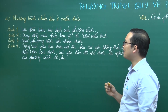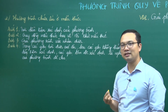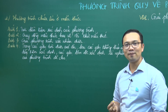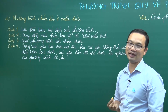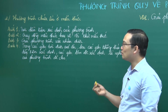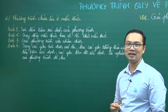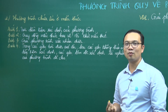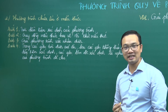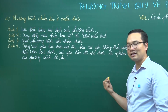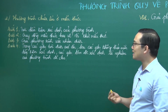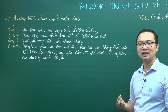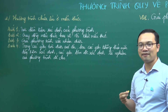Bước 2: quy đồng mẫu thức 2 vế rồi khử mẫu thức. Tư tưởng là làm mất cái mẫu đó đi bằng cách quy đồng đưa về mẫu chung, rồi khử mẫu ở 2 vế. Bước 3: giải phương trình vừa nhận được sau khi khử mẫu. Bước 4: so sánh các nghiệm tìm được với điều kiện xác định — nếu thỏa mãn thì là nghiệm, không thỏa mãn thì loại.